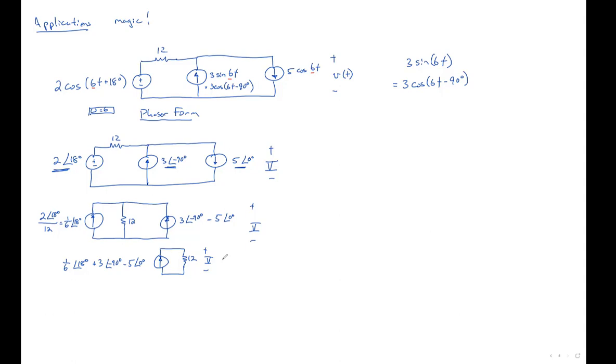So therefore, V is equal to, by Ohm's law, 12 times one sixth angle 18 degrees, plus 3 angle of minus 90 degrees, minus 5 angle of zero degrees. You throw that into your calculator, and it just returns 68 at an angle of minus 148 degrees. It does all the heavy lifting for you.